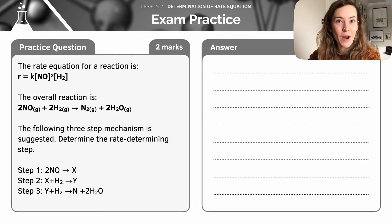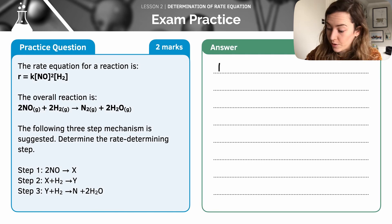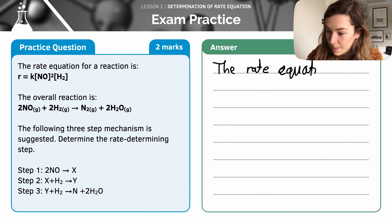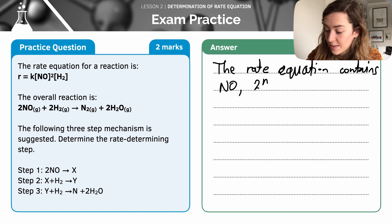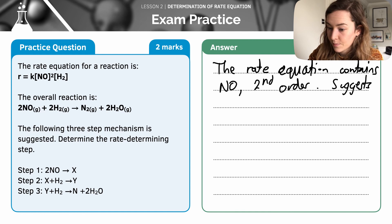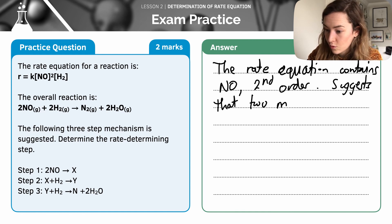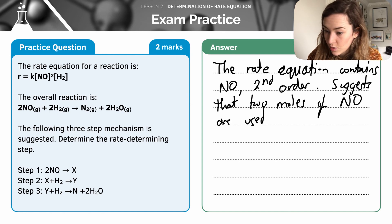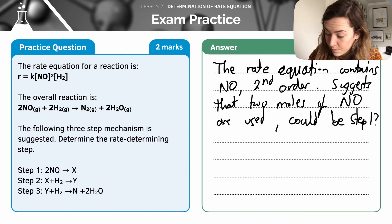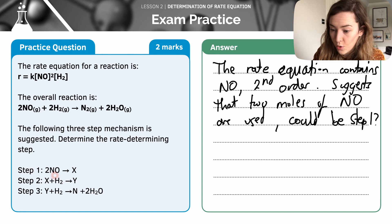Here's another question to have a practice at, and then I'll go through a worked example. The rate equation, as we can see, contains NO and it is second order. This suggests that two moles of NO are used, so the rate determining step could be step 1, because we can see two moles of NO used.